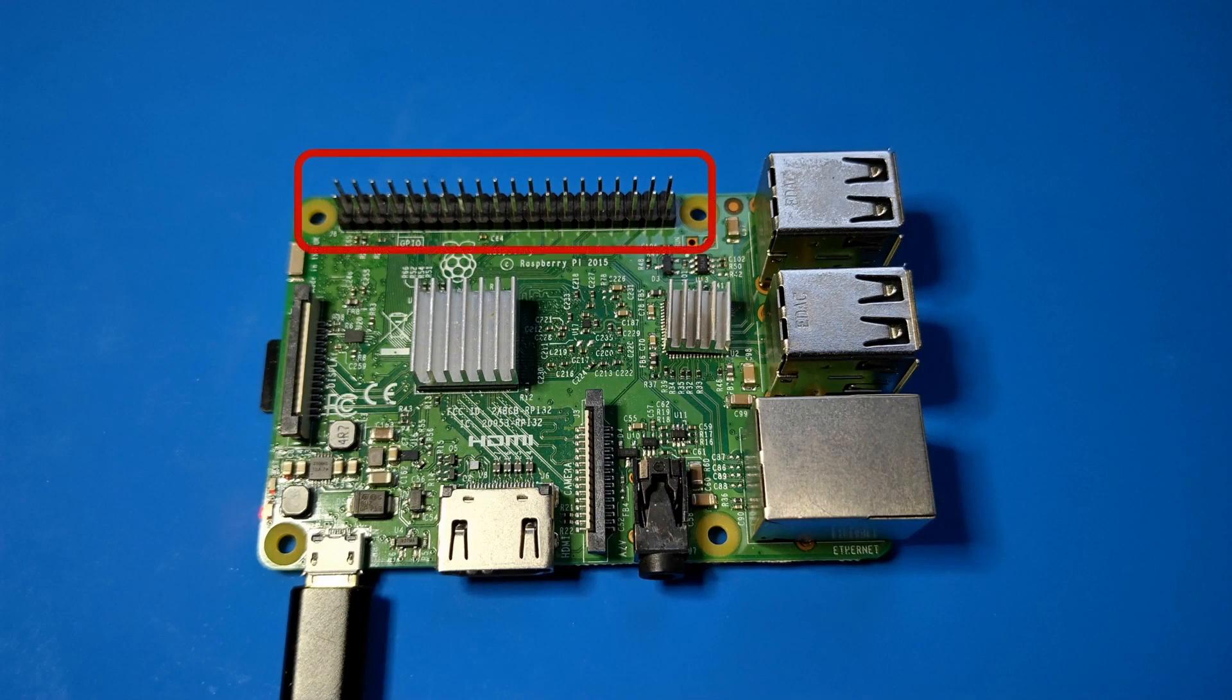I'll be using a Raspberry Pi, but remember the concepts are the same for other ARM devices too. This row of pins is called the General Purpose Input-Output, or GPIO, header.